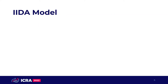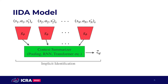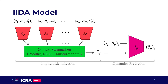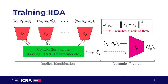IDA consists of two models: an implicit identification model that takes in contextual data from the current environment and outputs an implicit environment latency, and a dynamics prediction model that outputs an estimate for the next state conditioned on the current state, action, and latency. Both models are trained in an end-to-end fashion using only the reconstruction loss of the dynamics model.